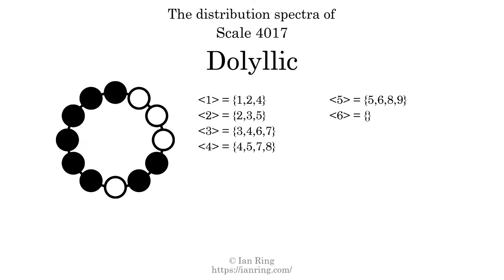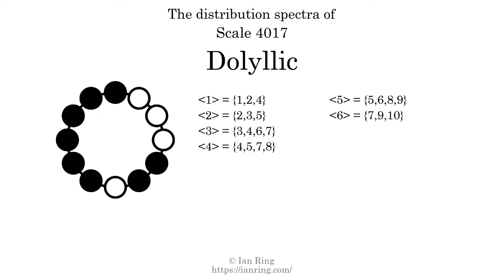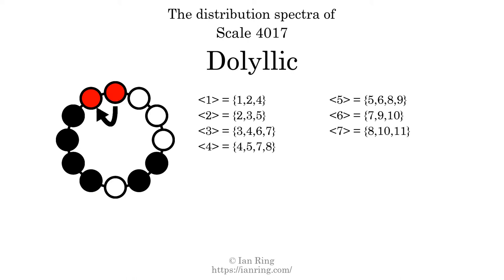The generic interval of 6 scale steps comes in 3 different specific interval sizes: 7 semitones, 9 semitones, and 10 semitones. The spectrum width of this generic interval is 3. The generic interval of 7 scale steps comes in 3 different specific interval sizes: 8 semitones, 10 semitones, and 11 semitones. The spectrum width of this generic interval is 3.